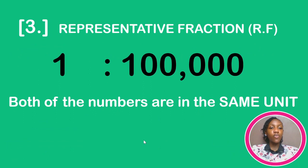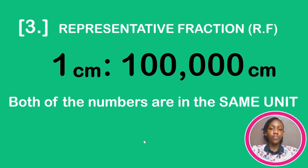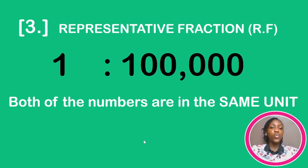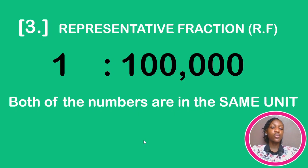In a representative fraction, both numbers are always in the same units — mostly centimeters. But since it's a ratio or fraction, the units always cancel out. That's why under your mapping practicals they don't write '1 centimeter : 100,000 centimeters' — because the units cancel out.